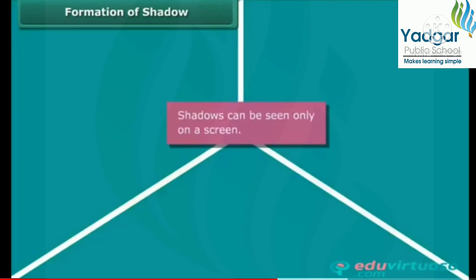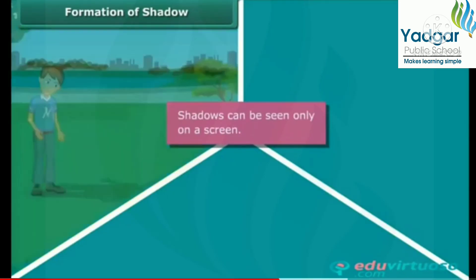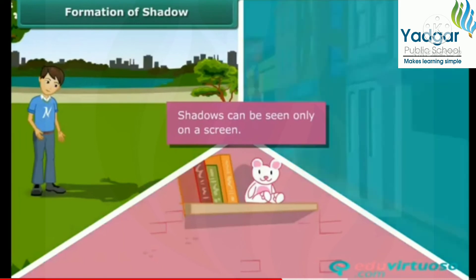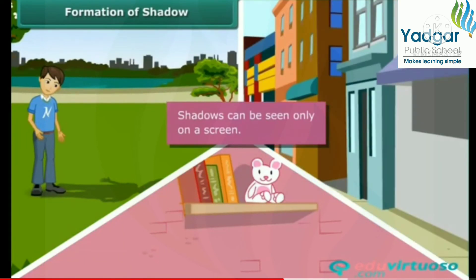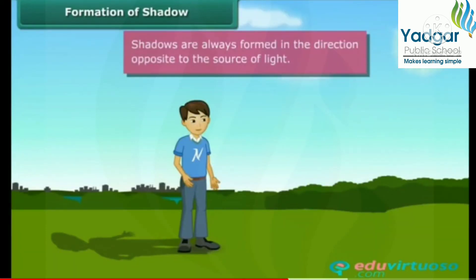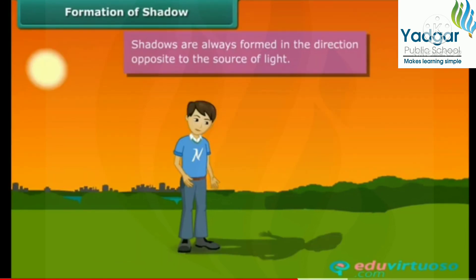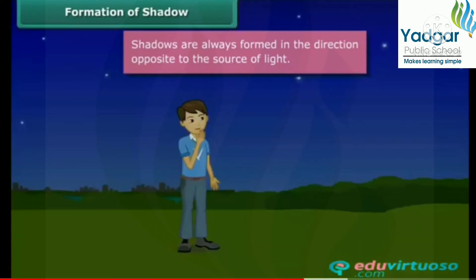Shadows are formed when an opaque object is placed across the path of light. Shadows can be seen only on a screen. The ground, walls of a room, buildings and other such surfaces act as screens for shadows. Shadows are always formed in the direction opposite to the source of light. In the morning, since you were facing the sun, the shadow was behind you. In the evening, the sun was behind you, causing the shadow to be formed in front of you. When the sun sets, there was no light, and hence there were no shadows.